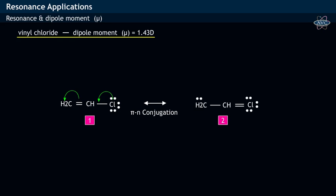This resonating structure two possesses a positive charge on chlorine and negative charge on carbon. This results in the formation of a dipolar structure, which is the reason for the molecule to have a specific dipole moment.